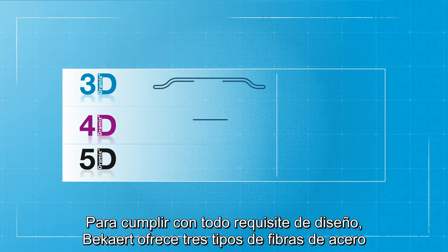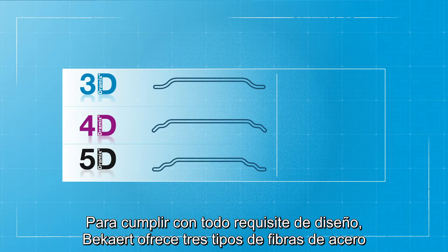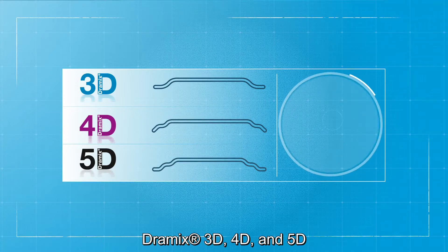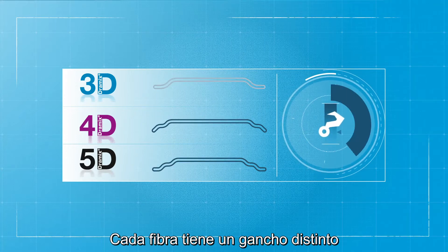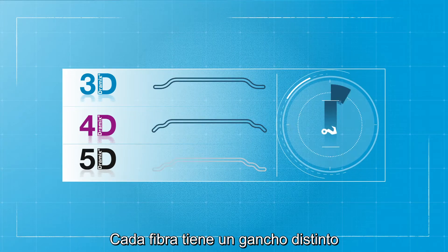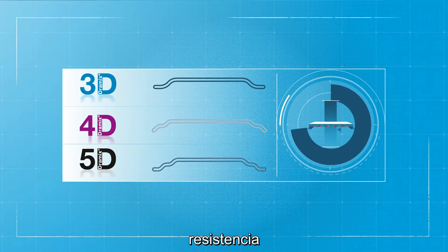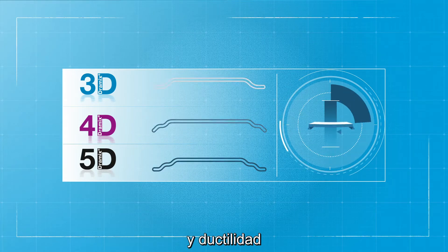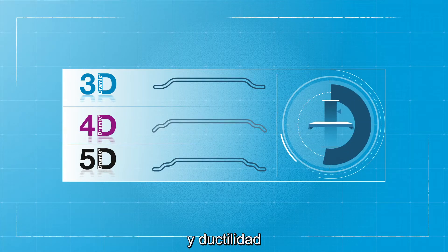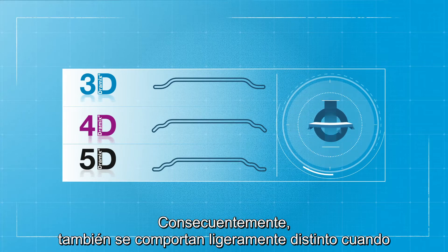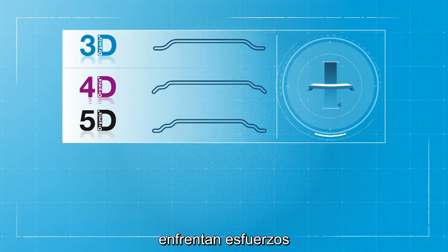To meet any design requirement, Bekaert offers three steel fiber types: Dramex 3D, 4D, and 5D. Each fiber has a different hook, strength, and ductility. Consequently, they also behave slightly differently when dealing with stresses.